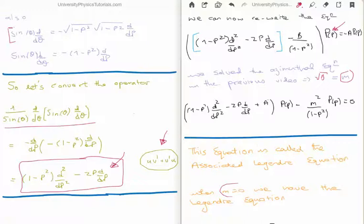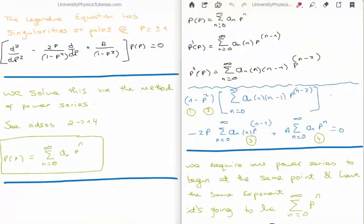When m equals 0 we get the Legendre equation, which removes the m squared term on the right hand side. In solving equations we always start with the easiest case, so I'm going to start with m equal to 0 and solve the Legendre equation. The Legendre equation has singularities or poles at p equals plus or minus 1, which we see by dividing across by 1 minus p squared — we get a divide-by-zero scenario. For that reason, we must use the method of power series in order to solve this particular equation. You can see videos 2 through 14 for the method of solving differential equations using power series.